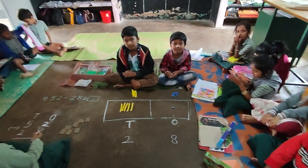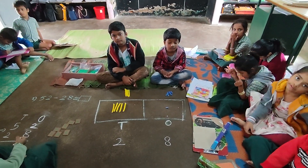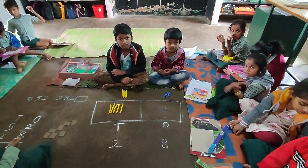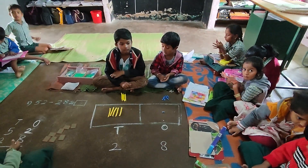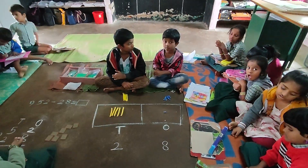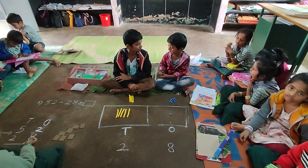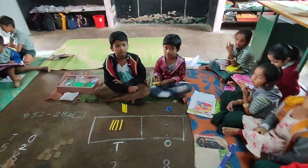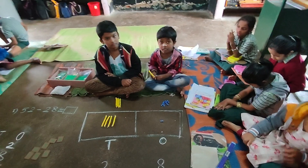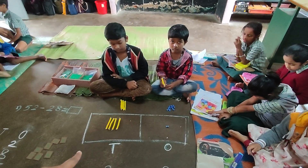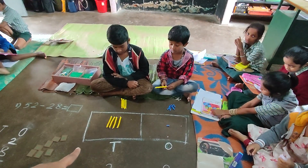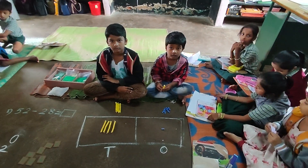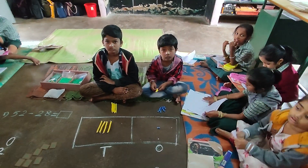Okay children, so now what do we have to do? The ones will get one ten from the tens place. You ask one ten from tens — give me one ten. Tens gave one ten to you, yes? So now in the tens place, how many are there? Four tens. Because one ten has been given to ones.